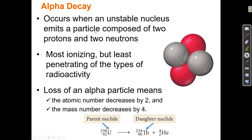Alpha decay occurs when an unstable nucleus emits a particle composed of two protons and two neutrons. Alpha particles cannot penetrate into matter very far — they get absorbed by pretty much the first piece of matter they interact with. But they are the most ionizing, meaning they have the highest tendency, when they do interact with matter, to turn neutral matter into an ion by ejecting electrons or protons from the atom.